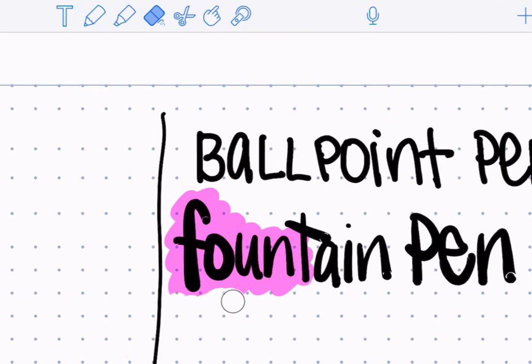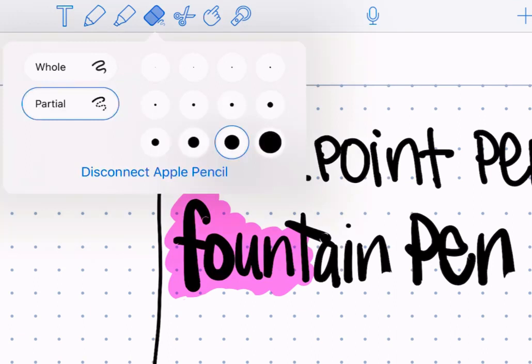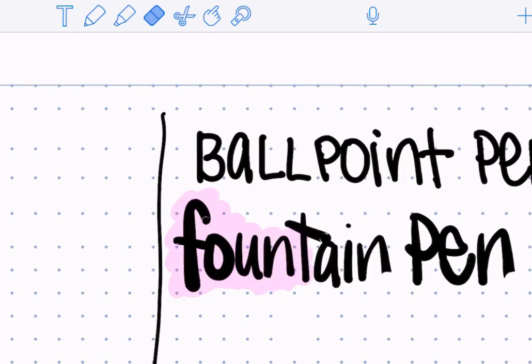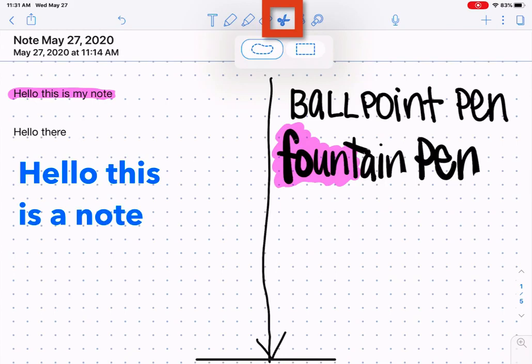Whereas if I change to partial, it will only erase where that circle is. So if I needed to just erase a portion of my highlight or a portion of my pen, I can do that with the partial eraser. The whole eraser is the default. And if I tap on any stroke, it's going to erase that entire stroke without me having to erase portions.